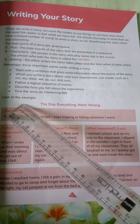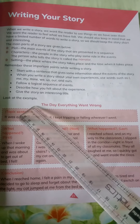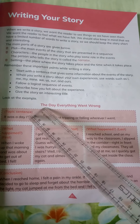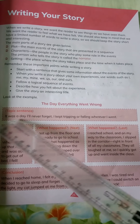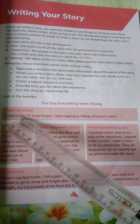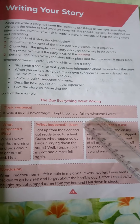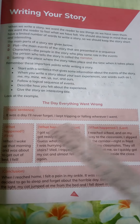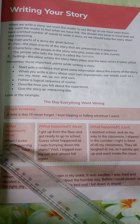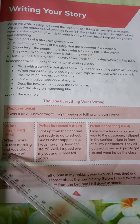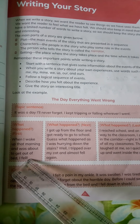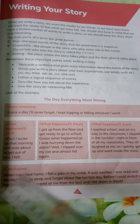Look at the example. The title is: 'The Day Everything Went Wrong.' Topic sentence: 'It was a day I will never forget. I kept tripping or falling wherever I went.' What happened first: when I woke up that morning and was about to get out of bed, I fell.